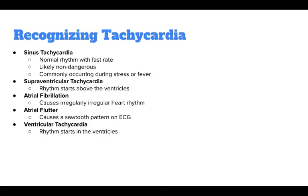There are several kinds of tachycardia, and they can be difficult to differentiate in children on the ECG due to the elevated heart rate. Sinus tachycardia has a normal rhythm with a fast rate, is likely non-dangerous, and commonly occurs during stress or fever. Supraventricular tachycardia starts above the ventricles. Atrial fibrillation causes an irregular heart rhythm. Atrial flutter causes a sawtooth pattern on the ECG. Ventricular tachycardia starts in the ventricles.